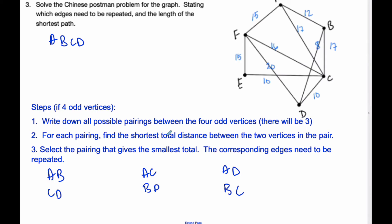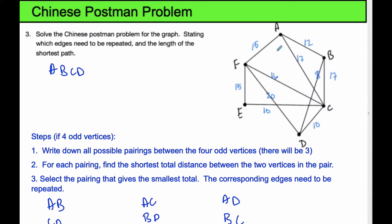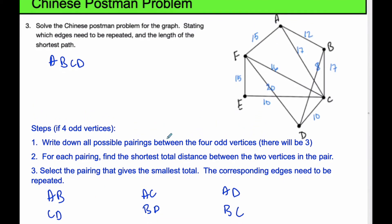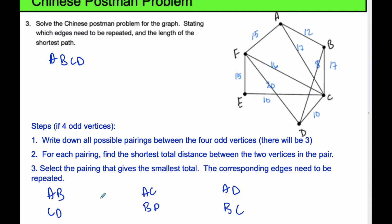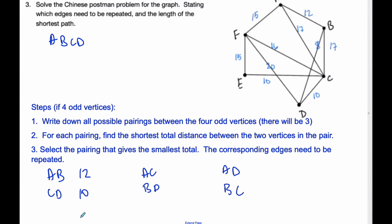For each pairing, find the shortest total distance between the two vertices in the pair. So if I'm going to go from A to B, I can clearly see that 12 is the shortest distance, and C to D is going to be 10. So the total of this distance is 22.